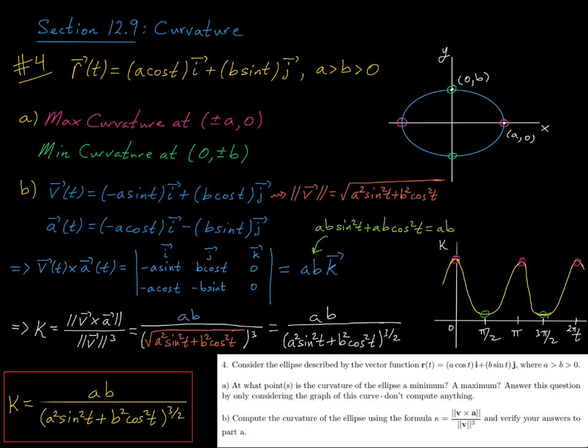Now the curvature is a minimum at odd multiples of pi over 2, so at pi over 2, 3 pi over 2, 5 pi over 2, so on and so forth, so that is when we're at the top and at the bottom.